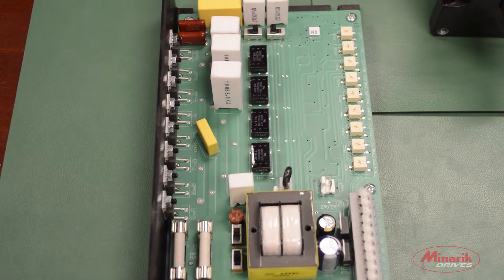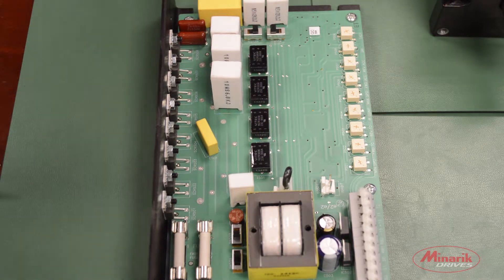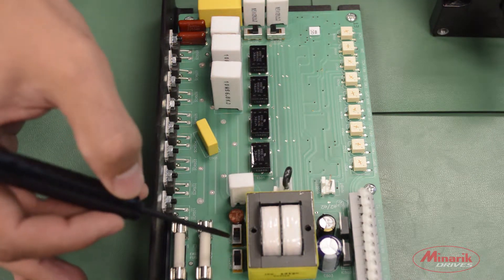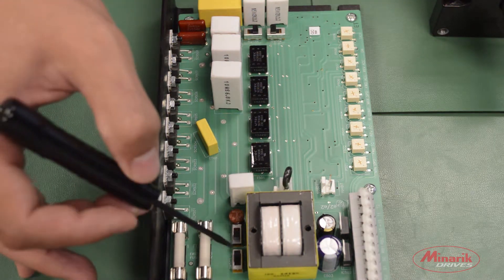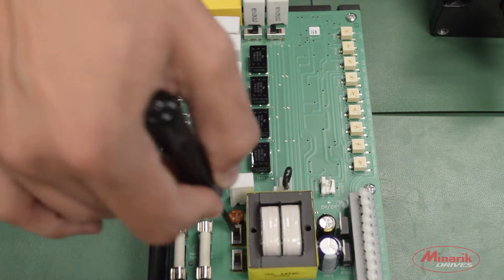The first step to wiring up this drive is to set the input and output voltage switches. The input voltage switches are located next to the transformer and are factory default set for 230 volts AC. We're going to be using 115 so we'll switch both of them to the 115 position.